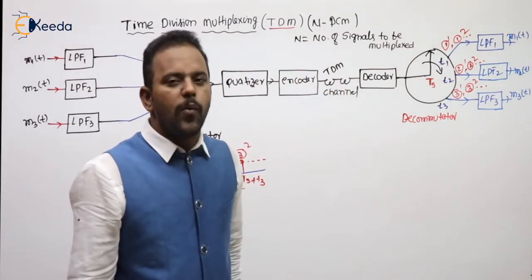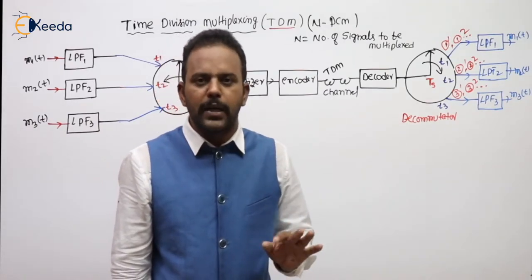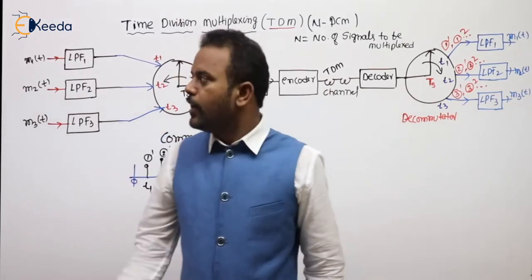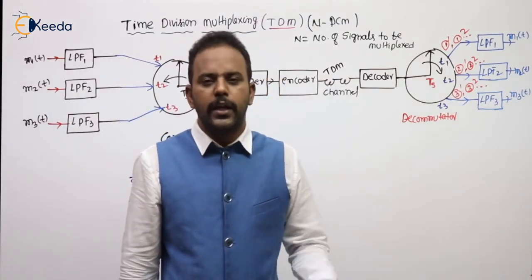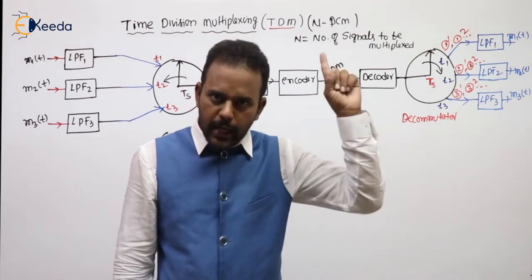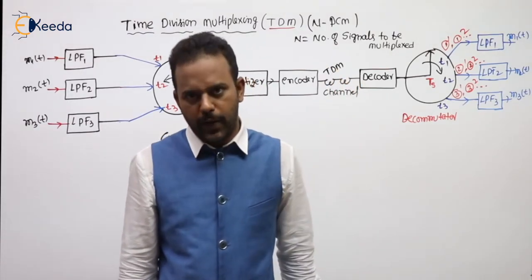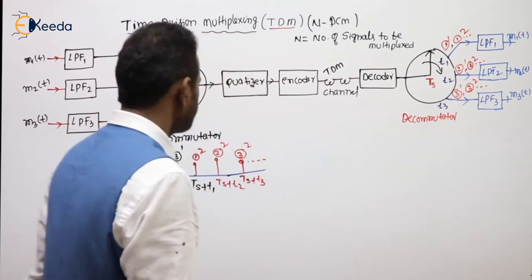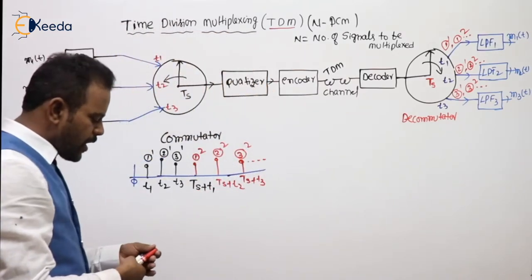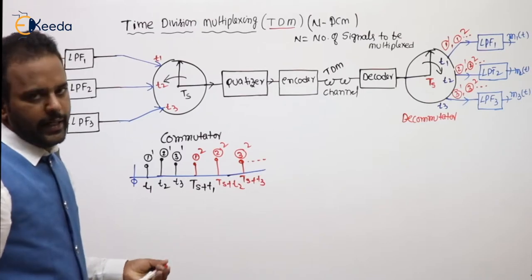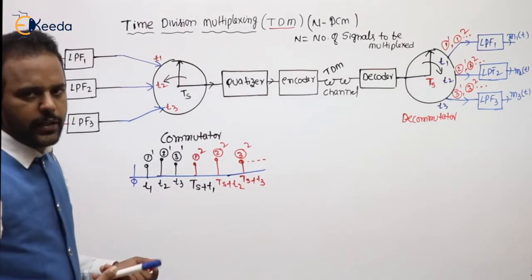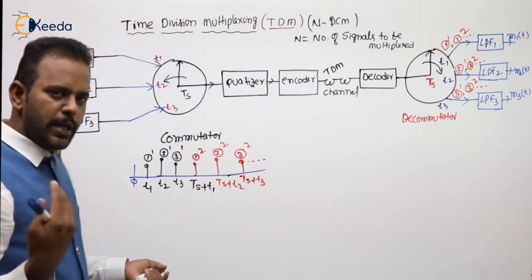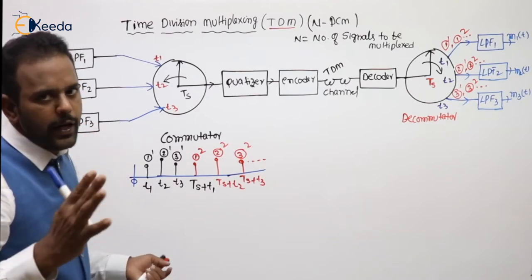This is the overall operation of time division multiplexing. It is the same as PCM; the additional things here are the commutator and decommutator, and here N signals are being transmitted. Practically, we are interested in transmitting many signals. The key thing to calculate is the bit rate. If you get the bit rate, you can calculate the bandwidth, since minimum transmission bandwidth is RB divided by 2.